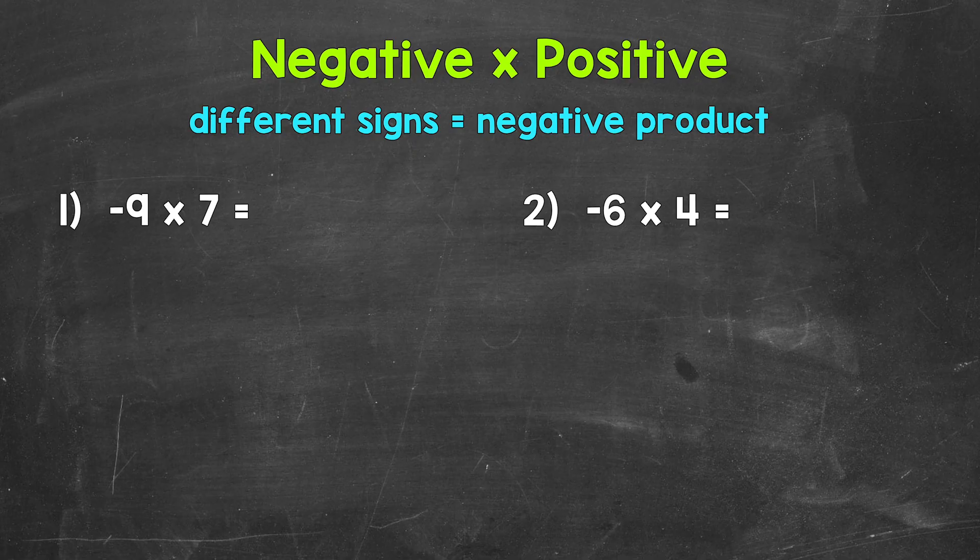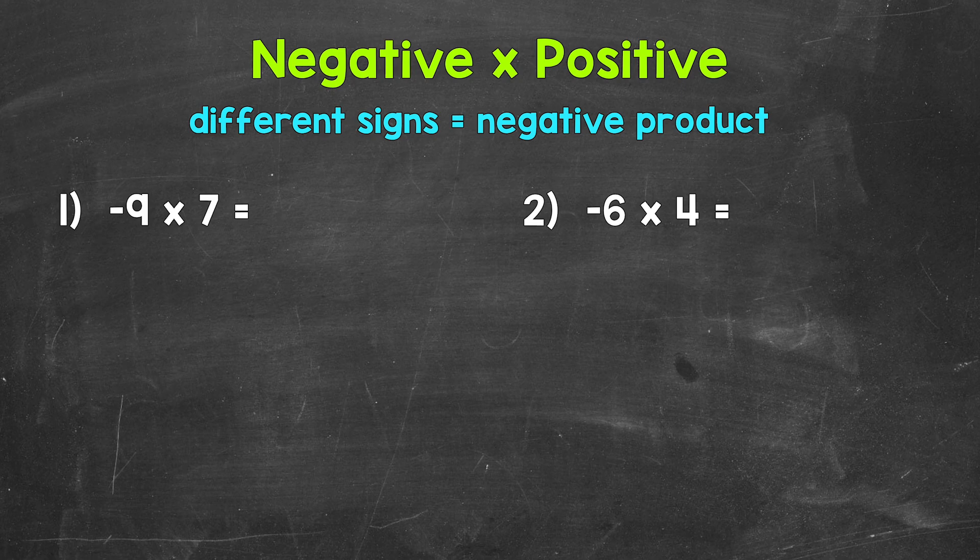Let's jump into number 1 where we have negative 9 times 7. With this being a negative times a positive, we have different signs. This means our product, the answer to a multiplication problem, will be negative. Different signs equal a negative answer.